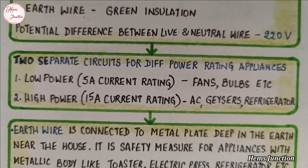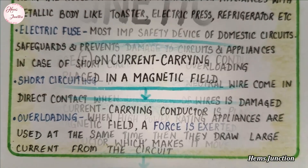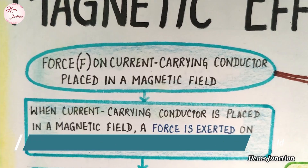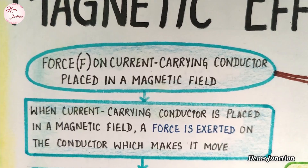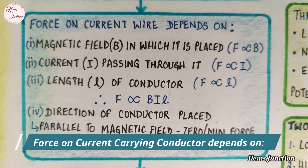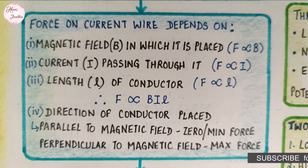Now let's see the remaining topics shared in this Part 2 mind map. Force on current carrying conductor placed in a magnetic field. The force depends on magnetic field, current, and the length of the conductor.